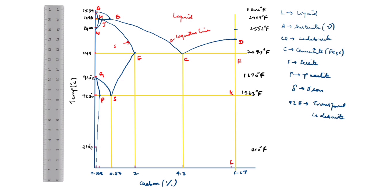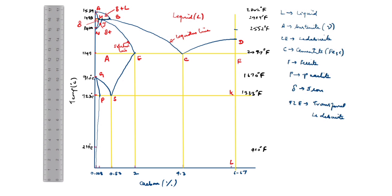This is the solidus line. This small portion is delta. This small portion is delta, and this is liquid. So what comes here — this is delta plus liquid. This line: delta plus L (liquid is L). This whole section is austenite. This small portion is delta plus austenite. This is delta, this is austenite. This portion is delta plus L. Here is L, so this portion is austenite plus L.